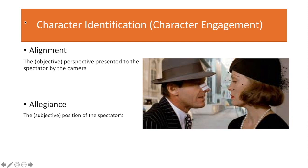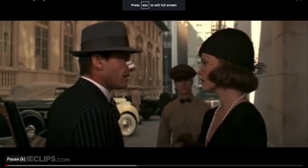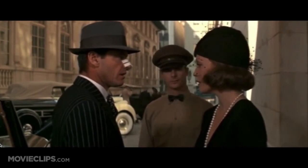I want to show two clips from Chinatown to elaborate on the differences between alignment and allegiance. In this film, we learn everything through the eyes of the detective, the Jack Nicholson character, except for one or two scenes where something is briefly shown and the camera briefly stays with another character. Usually we see everything only when it's presented to the central character.